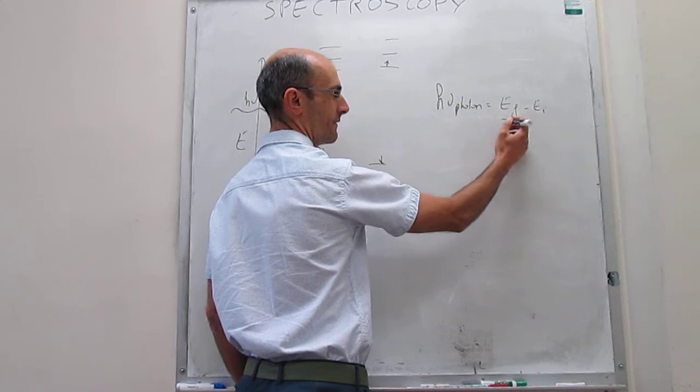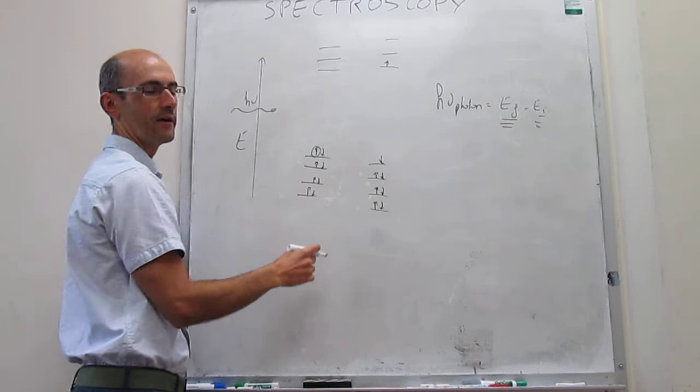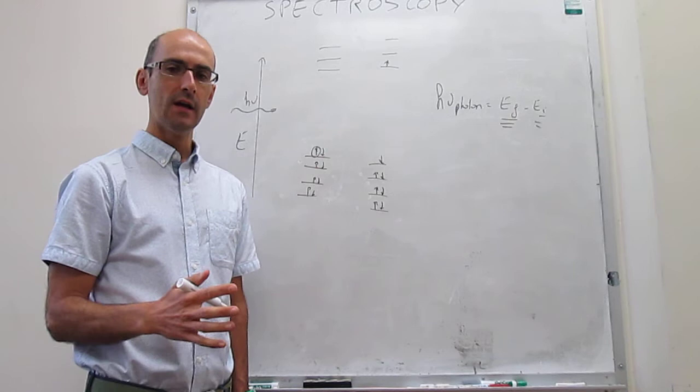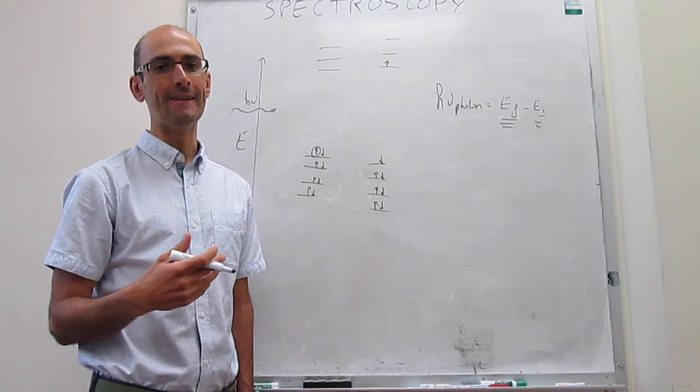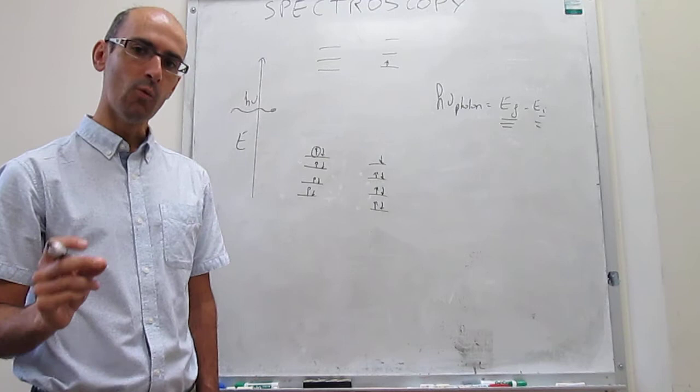The problem is that calculating the energies of molecular orbitals in an easy way is very difficult. You generally need computers for most molecules. There are a couple of examples where we've learned how to calculate electronic state energies, but those are very specific examples.